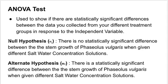When you do this test, you want to come up with two different types of hypotheses. There's the null hypothesis, which is that there is no statistically significant difference between the stem growth of Phaseolus vulgaris when given different saltwater concentration solutions.